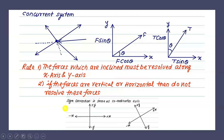The third rule to keep in mind is the sign convention, similar to the coordinate axis. In the horizontal direction, rightward is positive and leftward is negative. In the vertical direction, upward is positive and downward is negative. If the X-Y axes are tilted at some angle, the rightward-upward direction along X is positive and leftward-downward is negative. This sign convention must be followed while summing the forces.